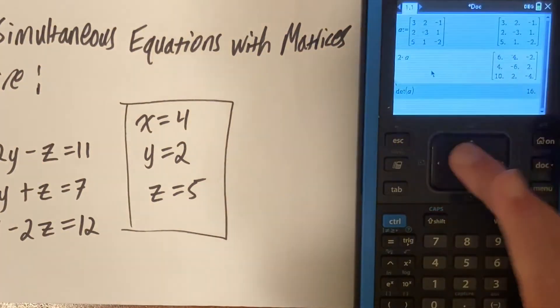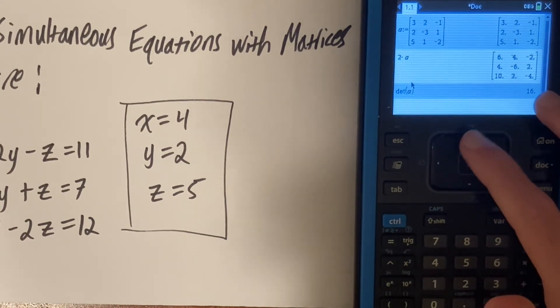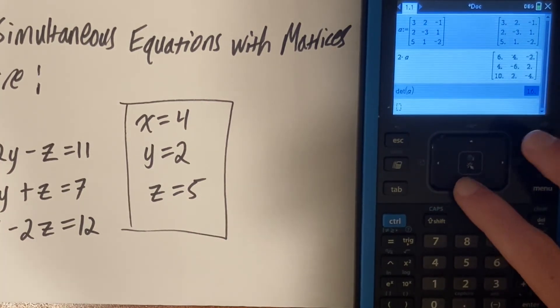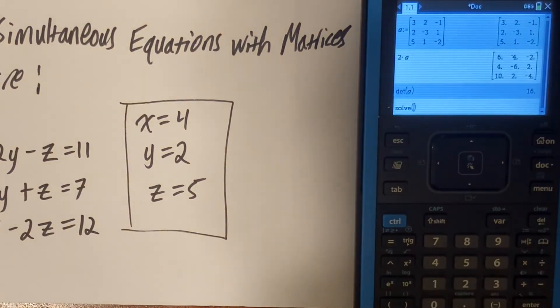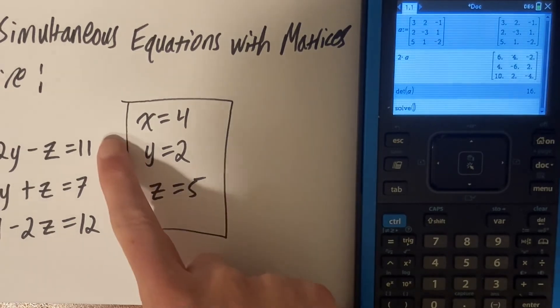Now, the last thing we're going to look at is another way to solve simultaneous equation that is a bit faster. This is what I always use, as it will save you a lot of time. You're going to want to hit menu, 3, 1, and that will bring up the solve function.